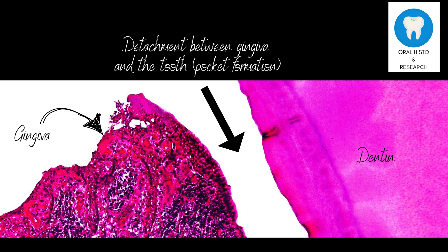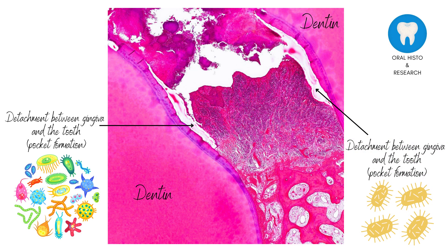Histologically, periodontitis is characterized by several key features. In the early stages, inflammatory cells, primarily neutrophils and macrophages, infiltrate into the gingival tissue. Gradually, the gum detaches from the tooth, leading to pocket formation. Additionally, there may be an increased presence of bacterial colonies within the periodontal pockets.